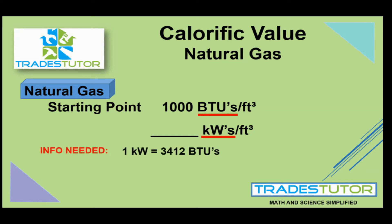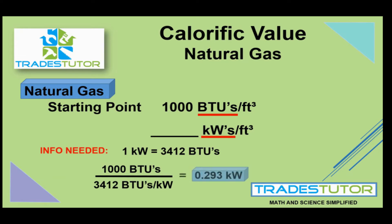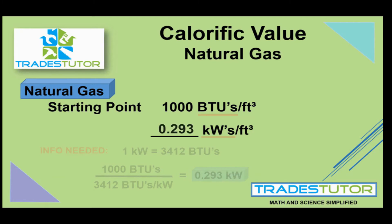We need the understanding that one kilowatt is 3412 BTUs. Then we take the number of BTUs we have and divide it by the number of BTUs needed to make one kilowatt, which is 3412. By doing that, we generate 0.293 kilowatts. So another way to express the calorific value of natural gas is 0.293 kilowatts per cubic foot.